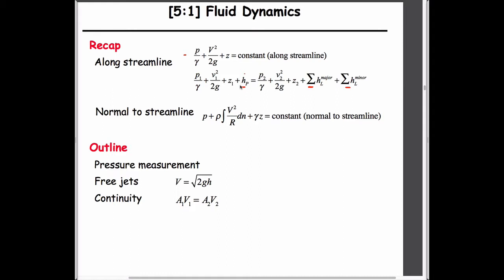When we include a pump head, it's useful to always write Bernoulli from upstream to downstream. Write it from upstream location one to downstream location two. It has to be done that way when dealing with losses, just out of convention.